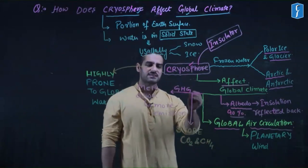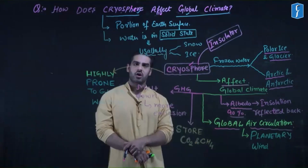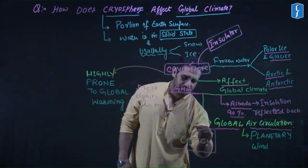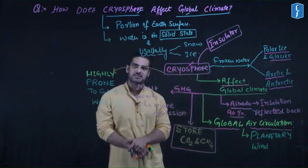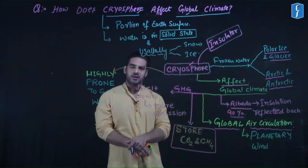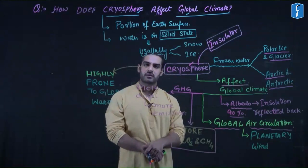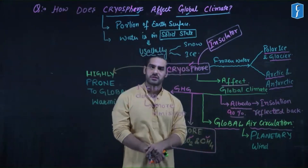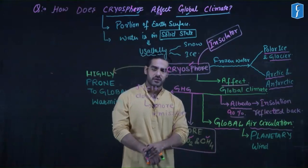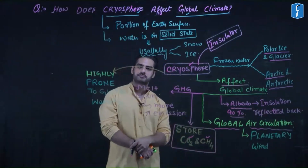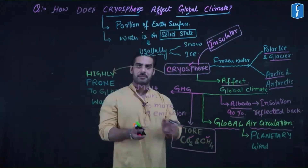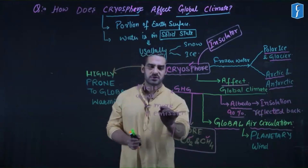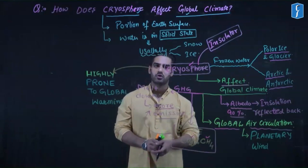In terms of greenhouse gases, the cryosphere plays two roles. We know that oceans act as a carbon sink, and a lot of carbon dioxide and methane is trapped in the water. When the polar sea surface is covered with ice, CO2 and methane remain trapped inside. But when the cryosphere melts, this CO2 and methane will be released into the atmosphere, intensifying emissions. So while cryosphere helps in trapping greenhouse gases, if it starts melting, it will release more and more greenhouse gases, leading to greater global warming.